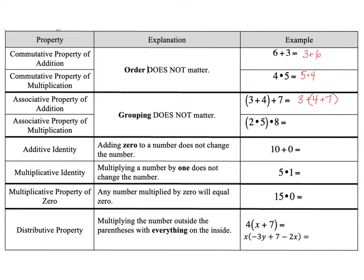So grouping does not matter when we are adding. Grouping also does not matter when we are multiplying. I have got parentheses around my 2 times my 5. And then I am showing that I am multiplying times 8. I could also get all 3 of those down again and group the 5 and the 8 together first.